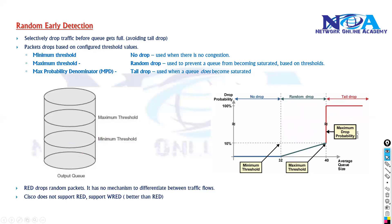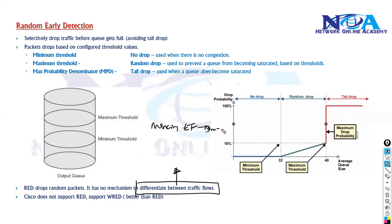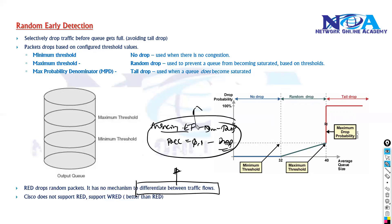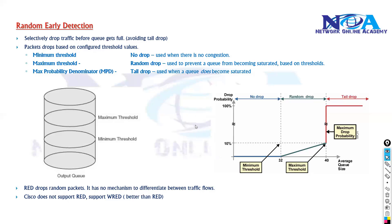The limitation or drawback of the Random Early Detection mechanism is that there is no differentiation of flows. There is no mechanism to differentiate and say: if the marking value indicates 'do not drop' then preserve it, or if the precedence value is 0 or 1 then drop it. RED performs random drops but has no mechanism to make priority-based distinctions.